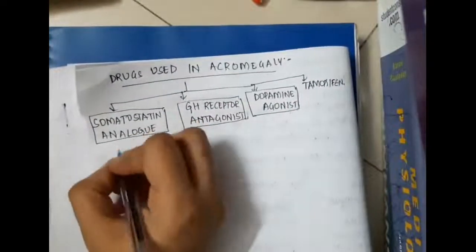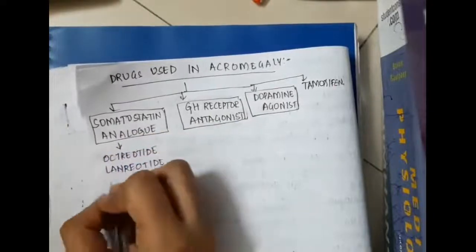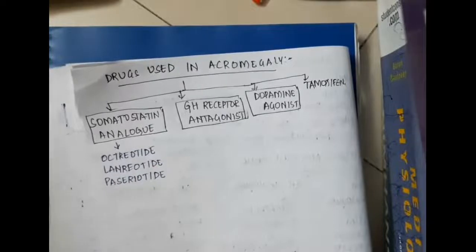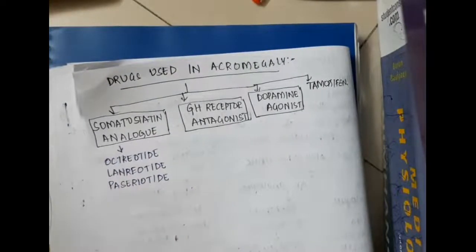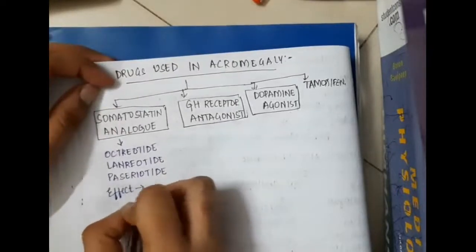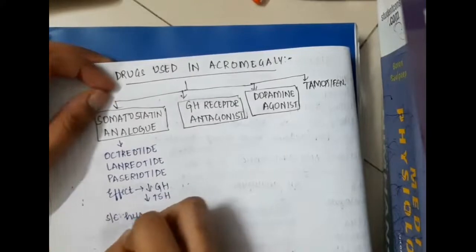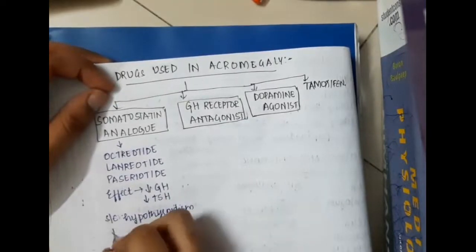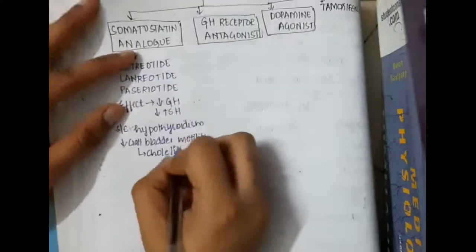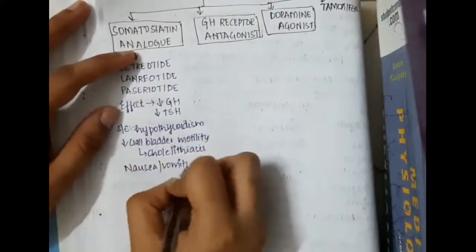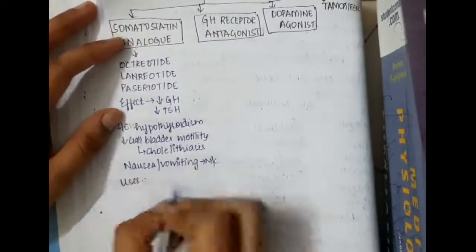Somatostatin analogs include octreotide, lanreotide, and pasireotide. All these somatostatin analogs will decrease growth hormone and also decrease thyroid stimulating hormone. Side effects include hypothyroidism, decreased gallbladder motility — thus these drugs can contribute to cholelithiasis — as well as nausea and vomiting.